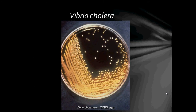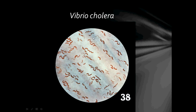This is Vibrio cholerae growing on TCBS agar. As you can see, they form large yellow colonies. This is Vibrio cholerae under microscopic view, or at least a diagram of it.